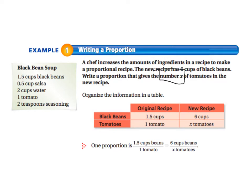It says organize the information in the table. So we've taken our original recipe, which is one and a half cups of black beans and one tomato. So we are getting this information from over here in the recipe. And so when we use one and a half cups of black beans in our original recipe, if we want to make a recipe using six cups of black beans, then we would need to figure out how many tomatoes that would need.